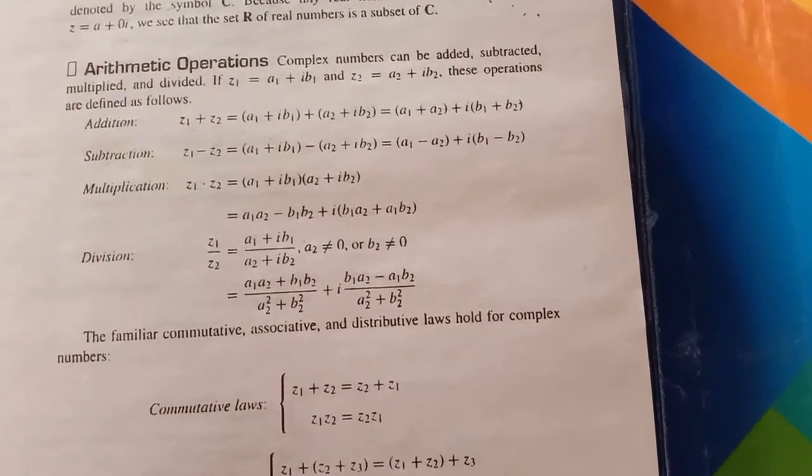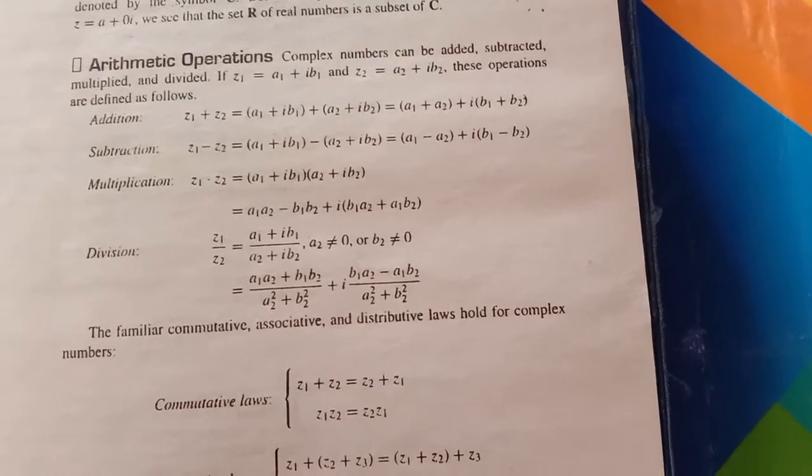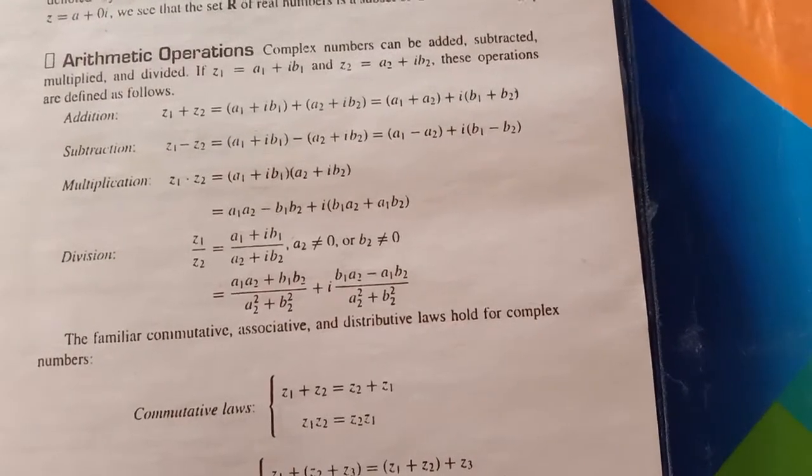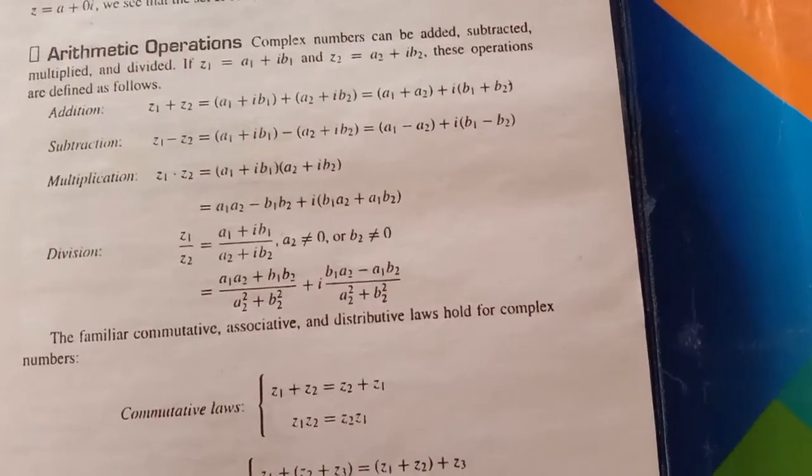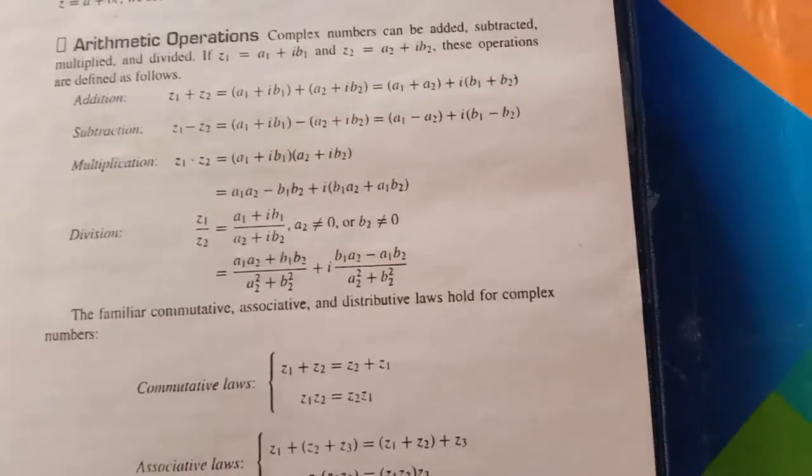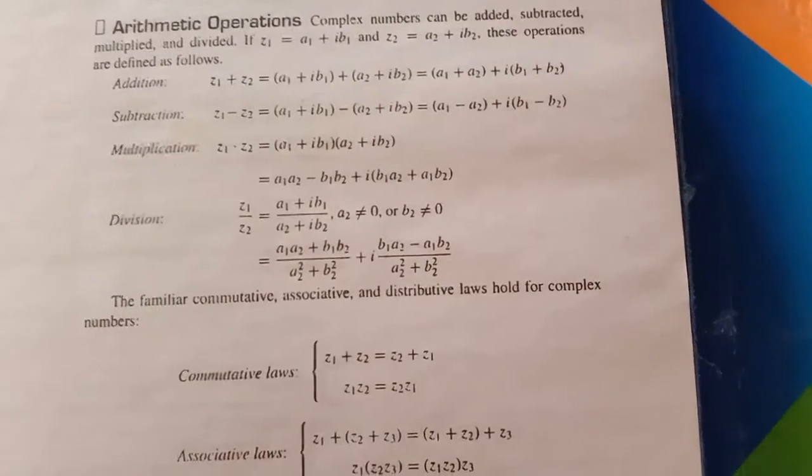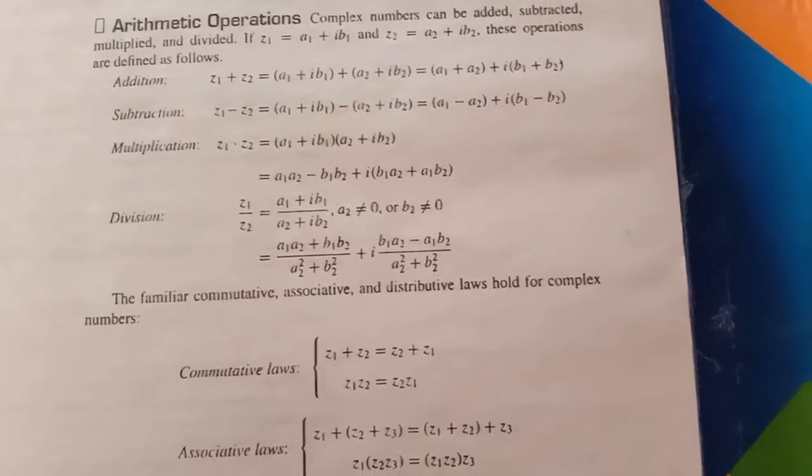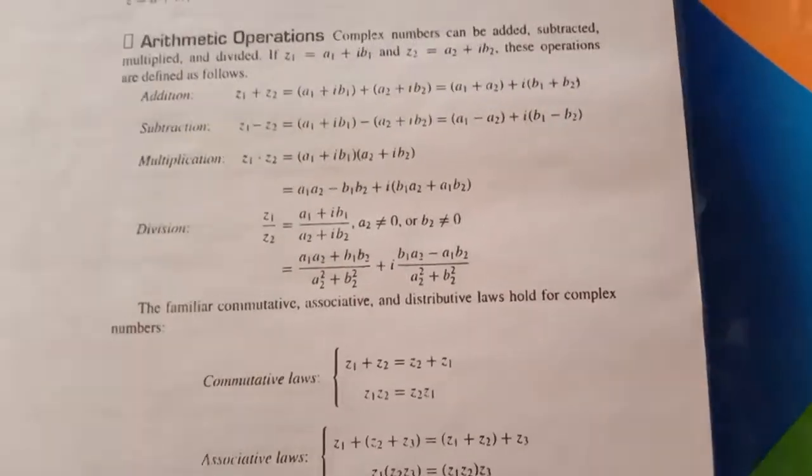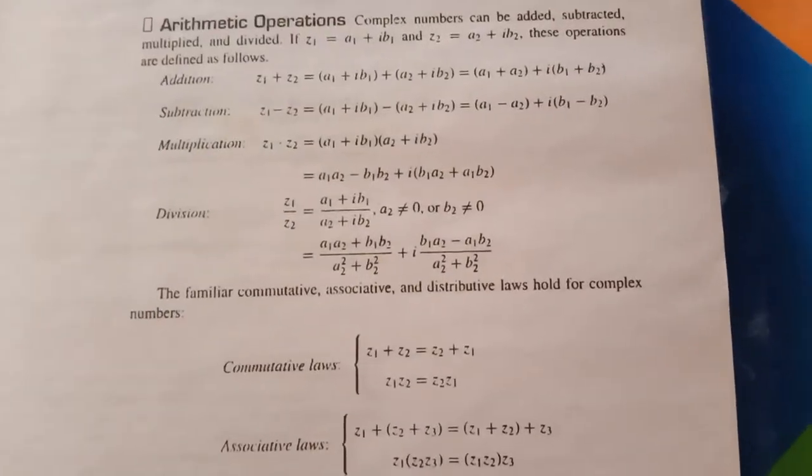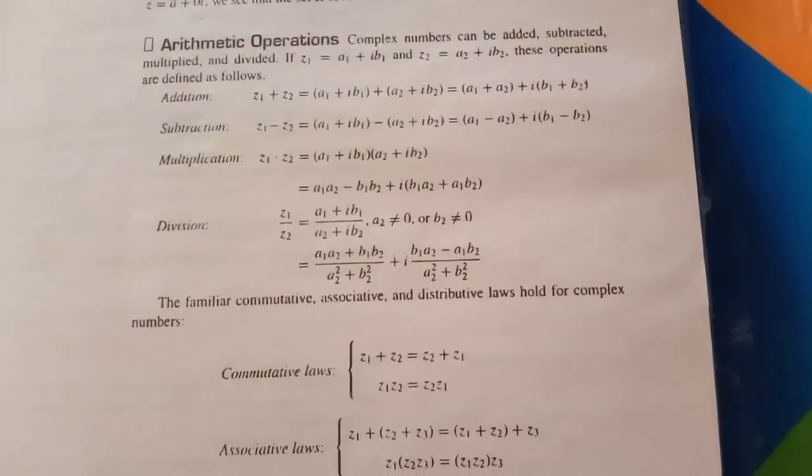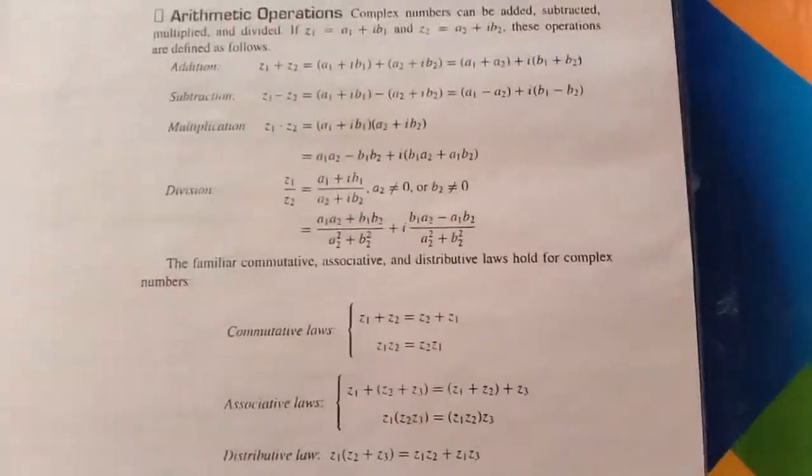To real part of the z1 multiply with real part of the z2, phir iske baad real part of the z1 multiply with imaginary part of the z2, phir iske baad real part of the z1 multiply with the imaginary part of the z2. Phir ham uske darmiyan mein plus minus notation lagayenge aur iota square yaha par bhi aega. Iota square ki value hamein maloom hai ke minus 1 ke barabar hai, aur is tarah ham simplify karenge to multiplication bhi aegi.